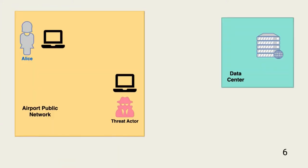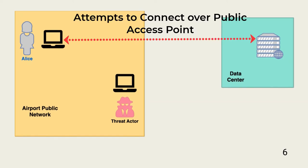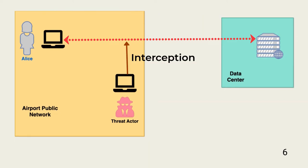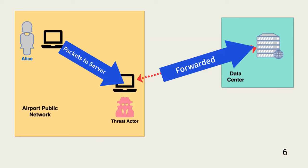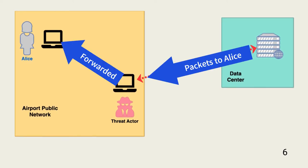Another method of attacking wireless connections is a man-in-the-middle attack over a public network. In this example, Alice attempts to connect from her laptop in an airport to a server in her organization's data center. Because Alice's organization has not yet secured this type of access, Alice's attempt is intercepted by a threat actor, who becomes an intermediary or middleman who can see all traffic between Alice's laptop and the data center server.